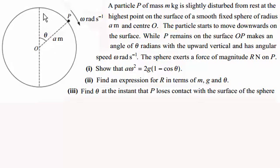The particle starts to move downwards on the surface. While P remains on the surface, OP makes an angle of theta radians with the upward vertical and has angular speed of omega radians per second. The sphere exerts a force of magnitude R newtons on P. And we've got to show that a omega squared equals 2g times all of 1 minus cos theta. And then we've got to find some other bits in the later sections which we'll run through.